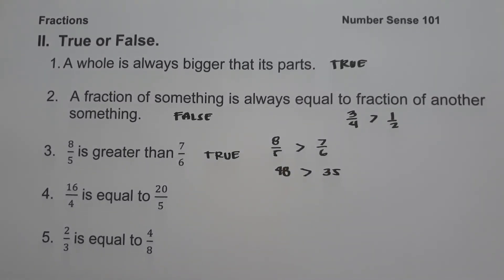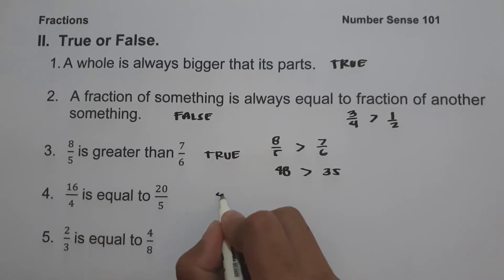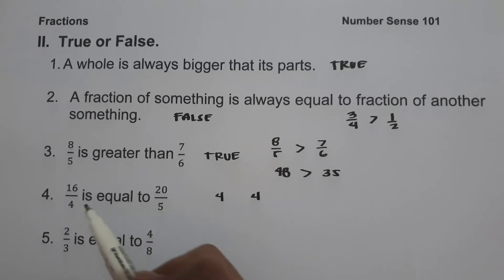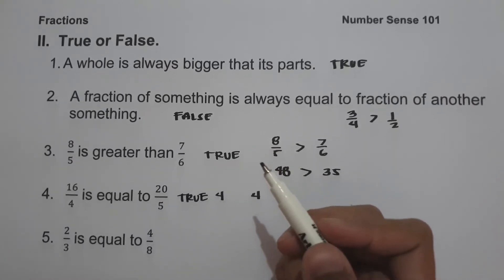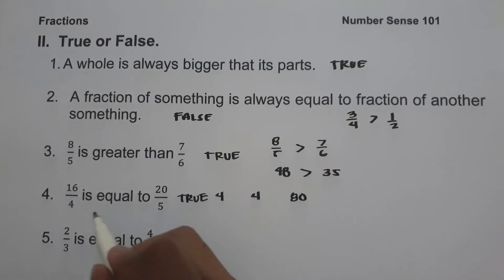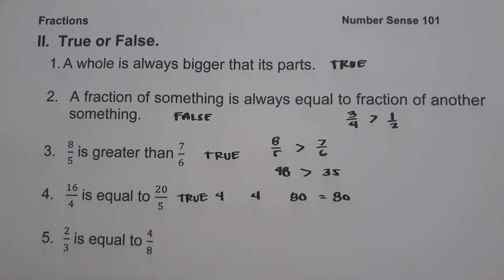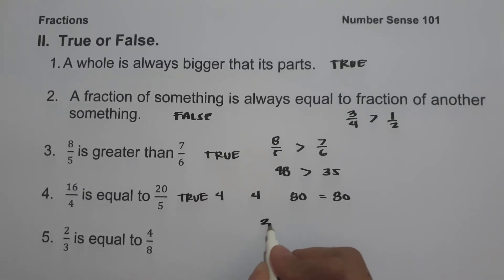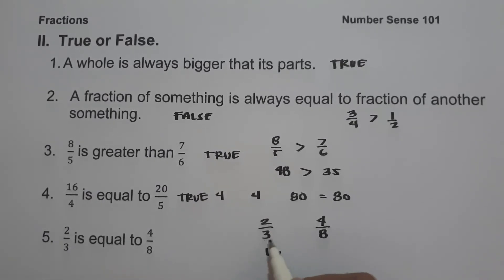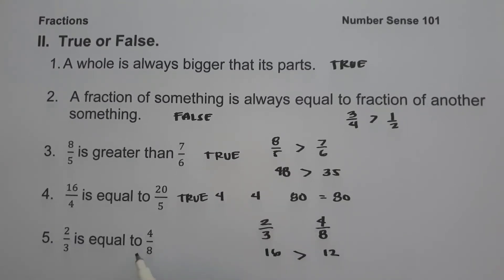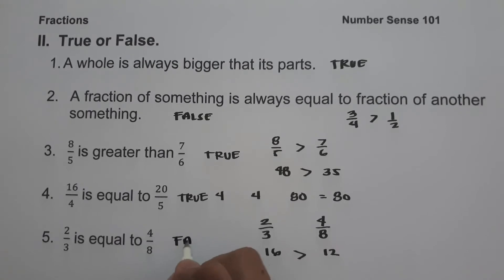On number 4, we have: 16 over 4 is equal to 20 over 5. Dividing 16 over 4 gives 4, and 20 over 5 also gives 4, so they are equal — true. You can also cross-multiply: 16 times 5 is 80, and 4 times 20 is also 80. On number 5, we have: 2 third is equal to 4 over 8. Cross-multiplying: 2 times 8 is 16, and 3 times 4 is 12. Since 16 is greater than 12, 2 third is not equal to 4 over 8, so the statement is false.